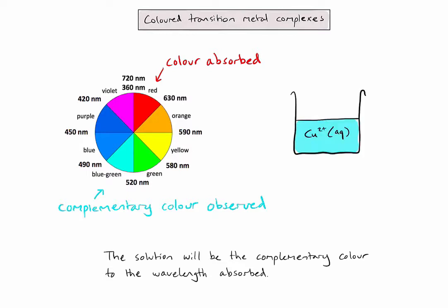Now, of course, if the small energy gap between the d-orbitals that have been split changes, the color absorbed by electron transitions will change, and therefore the complementary color will also change.